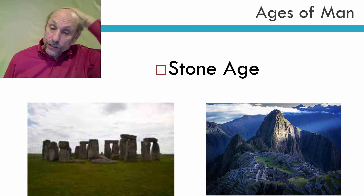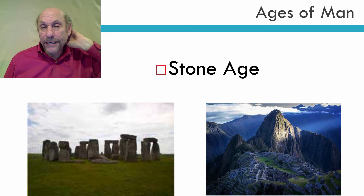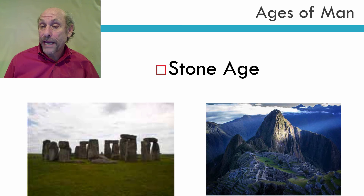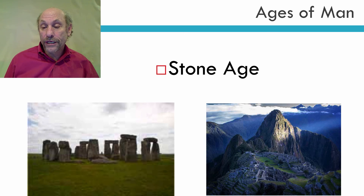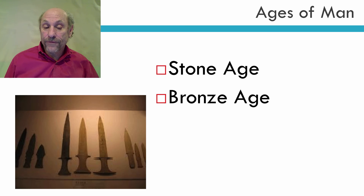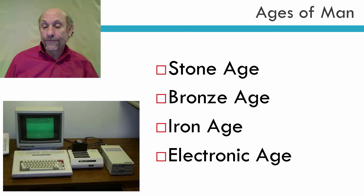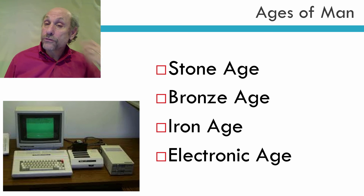These four information ages — cave painting, writing on parchment or paper, the printing press, and the electronic age — roughly correspond to the four ages of man: the stone age (I have pictures here of Stonehenge and Machu Picchu, which were stone age buildings), then the bronze age, then the iron age, and finally the electronic age. They roughly correspond to these four ages of man.